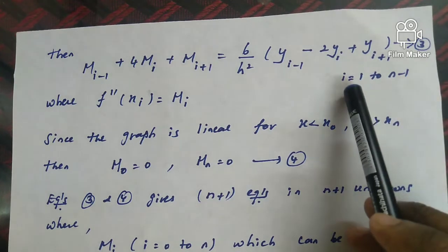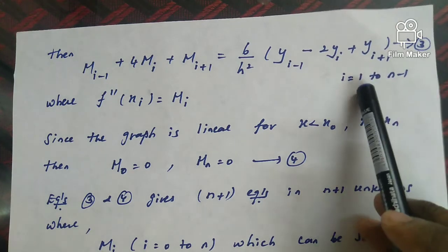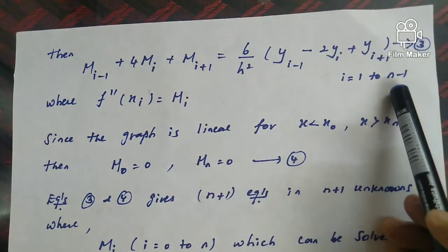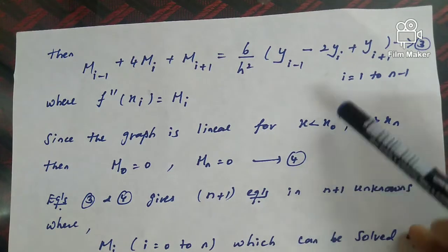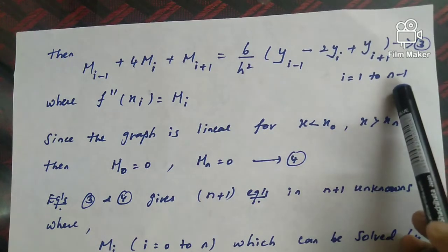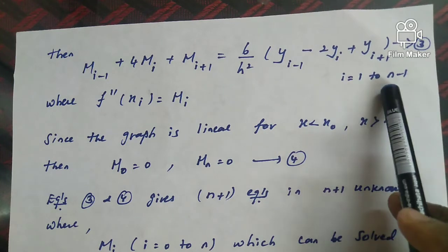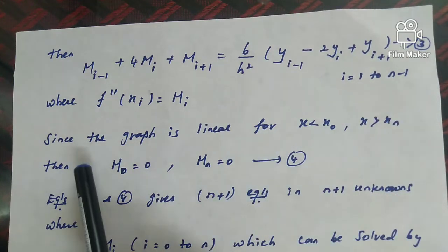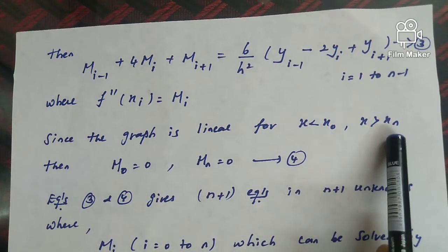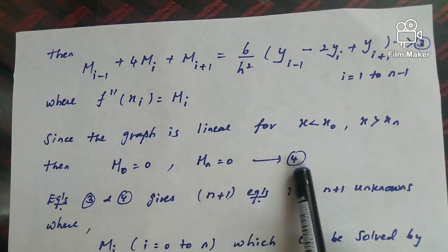For example, if the given data runs from x0 to x3, then n equals 3 and i takes values 1 to 2. Substituting i = 1 and i = 2 in equation 3 gives two equations, from which we can solve for m1 and m2. The boundary conditions are m0 = 0 and mn = 0, since the graph is linear beyond the interval. This is equation 4.